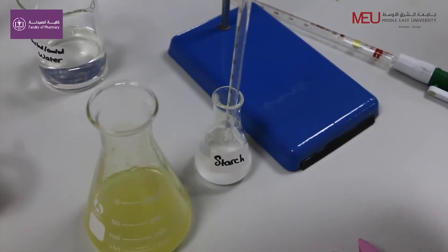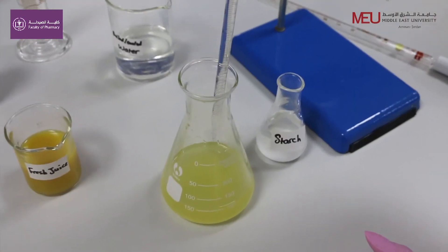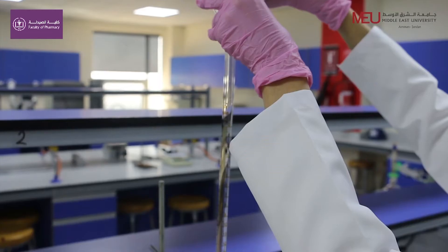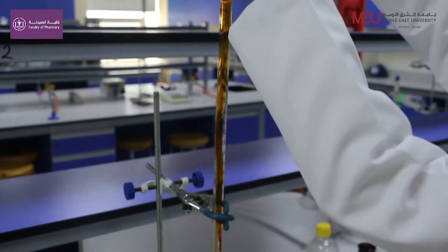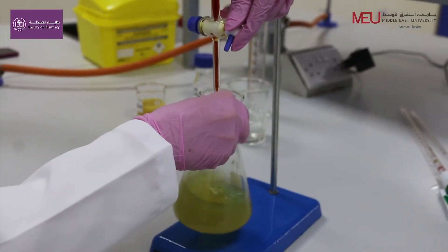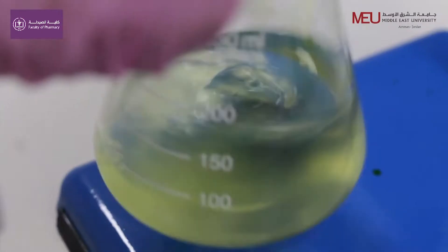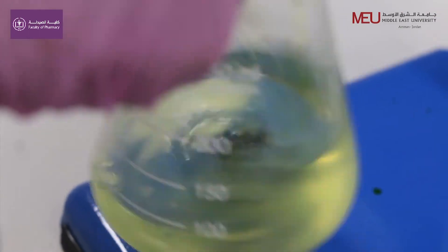Add 5 ml starch indicator. Titrate with 0.05 molar iodine solution. Record your readings and start your calculations.